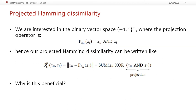In our paper, we are mostly interested in the binary vector space of minus one and one, where the projection operator is the AND operation between the two hash codes. Hence, by definition, our projected Hamming dissimilarity can be written as the equation in the middle, where we just plug in the projection. When we look at it, it looks very similar to the Hamming distance, but instead of having the item hash code on the right-hand side, we have the projection. And of course, the question is why is this actually beneficial, and is it still fast?